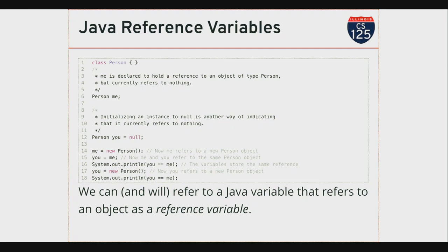So when we get to line 15, how many objects have been created by this piece of code? One. I see new on line 14. I have two reference variables — one called me and another called you. Both of those can store a reference to a Person object. On line 14, I both created a Person object and saved its reference in the variable me. Line 15 does not create a new object. What it does is copy the reference from me to the variable you. So now I have two references to the same object. There's only one object in this system.